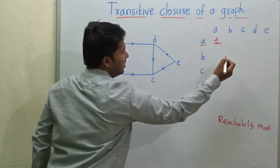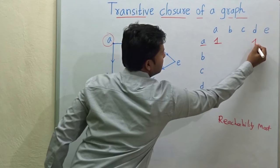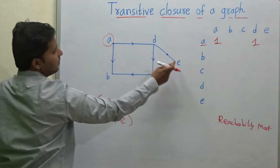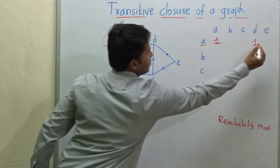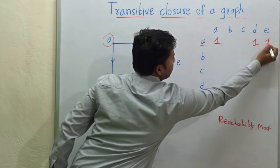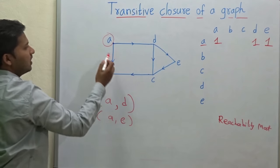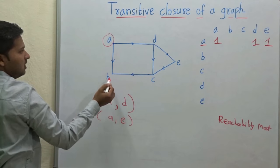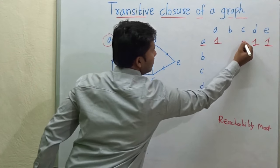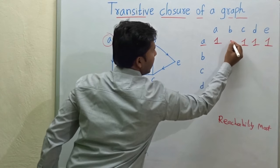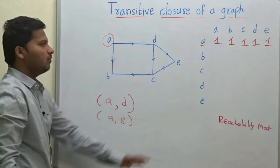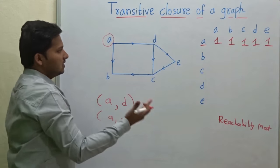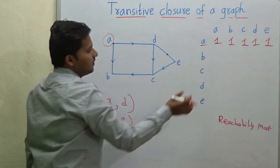Then from vertex A, we can reach B, so the value is 1. Then from vertex A, we can reach E, so the value is 1. Then from vertex A, you can reach C, then you can reach D, so the value is 1 and 1. Means from vertex A, you can reach every other vertex.